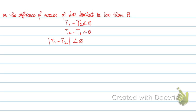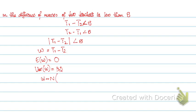The modulus makes the difference positive. W equals T1 minus T2. The mean of W will be 60 minus 60, which is 0. The variance of W will be 16 plus 16, that's 32. So W follows a normal distribution with mean 0 and variance 32. We require the probability of modulus of W less than 8, which using algebra becomes the probability that W is between minus 8 and 8.